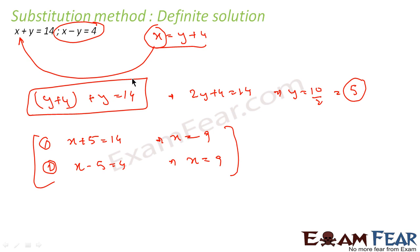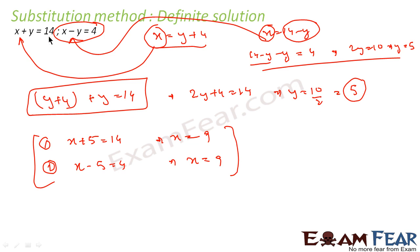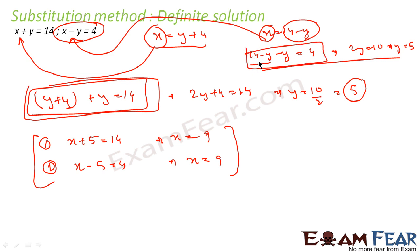You will get the same answer if you write x equal to 14 minus y and then use this value of x in the second equation: 14 minus y minus y equals 4, giving 2y equal to 10, so y equals 5. You can write either equation in terms of y or x — it does not matter. Choose one equation, write it in terms of one variable, substitute into the other equation, and solve. The goal is to create one equation in a single variable.